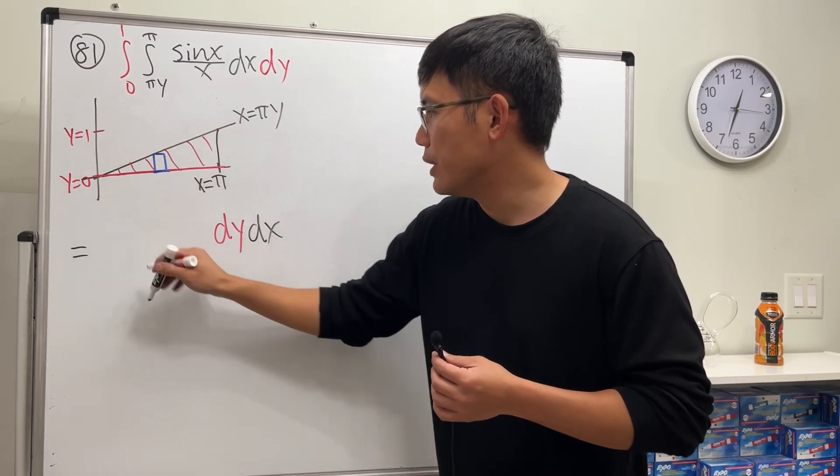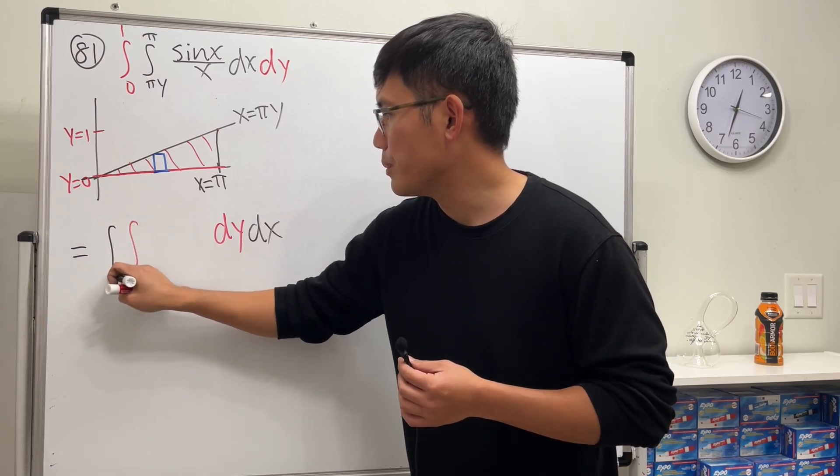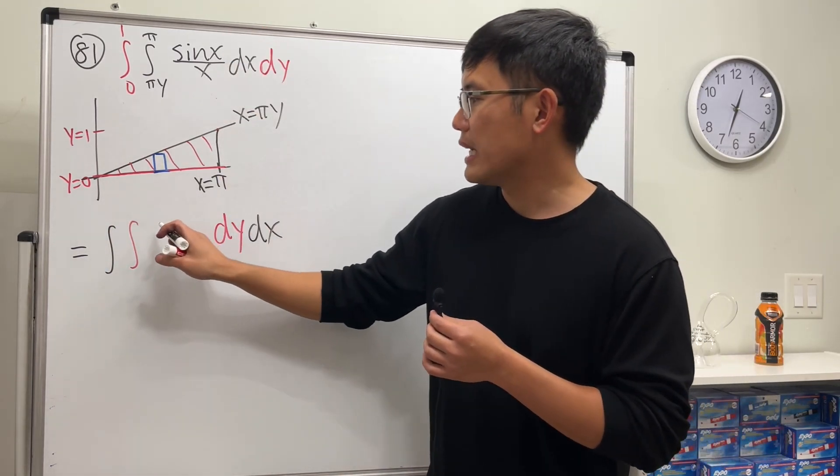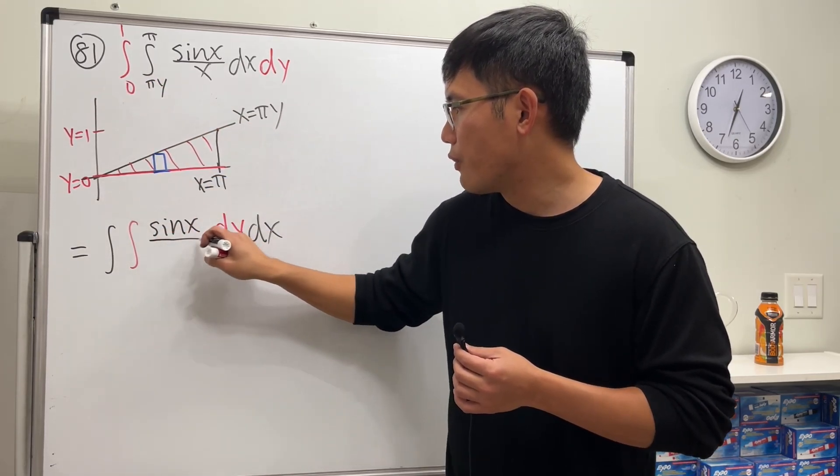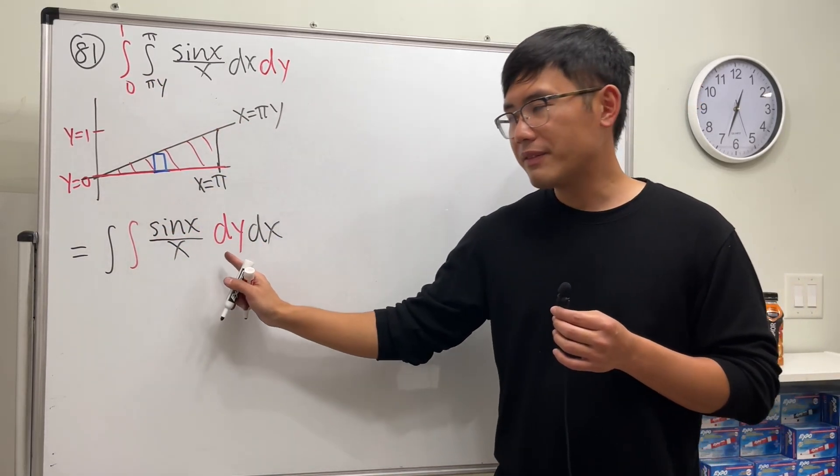So this right here I want to have dy going first, and then dx. And then we have the integral.